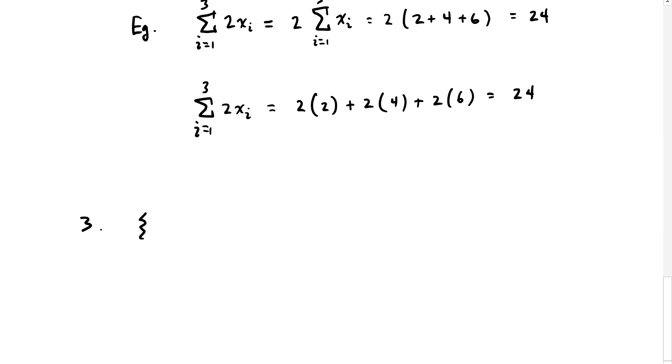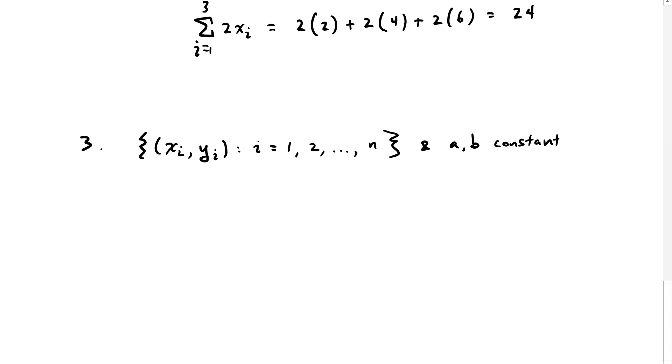Now we're going to have pairs of numbers, xi and yi, all indexed as before. So there are n of both of those, our pairs of numbers, and a and b are constants.